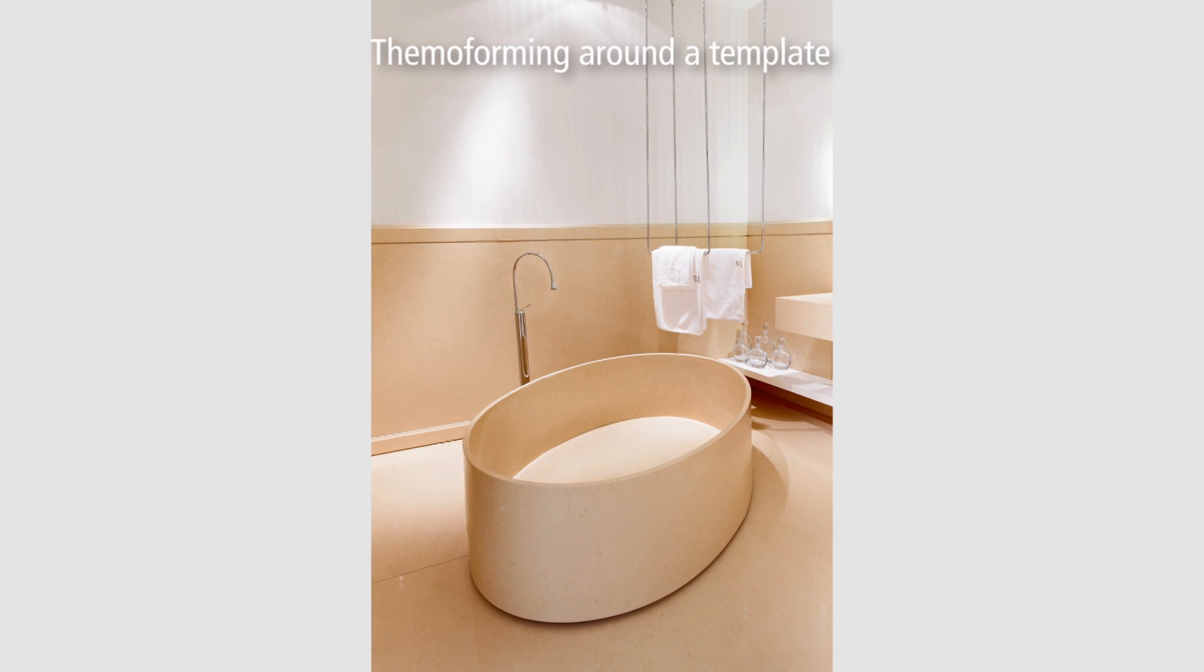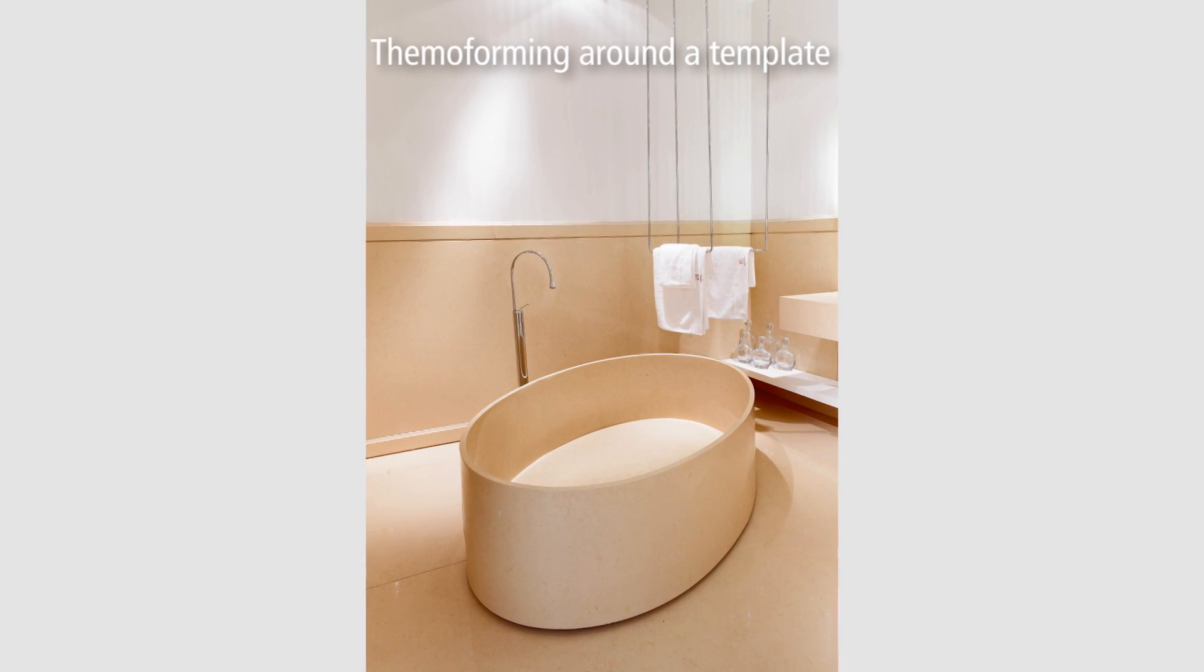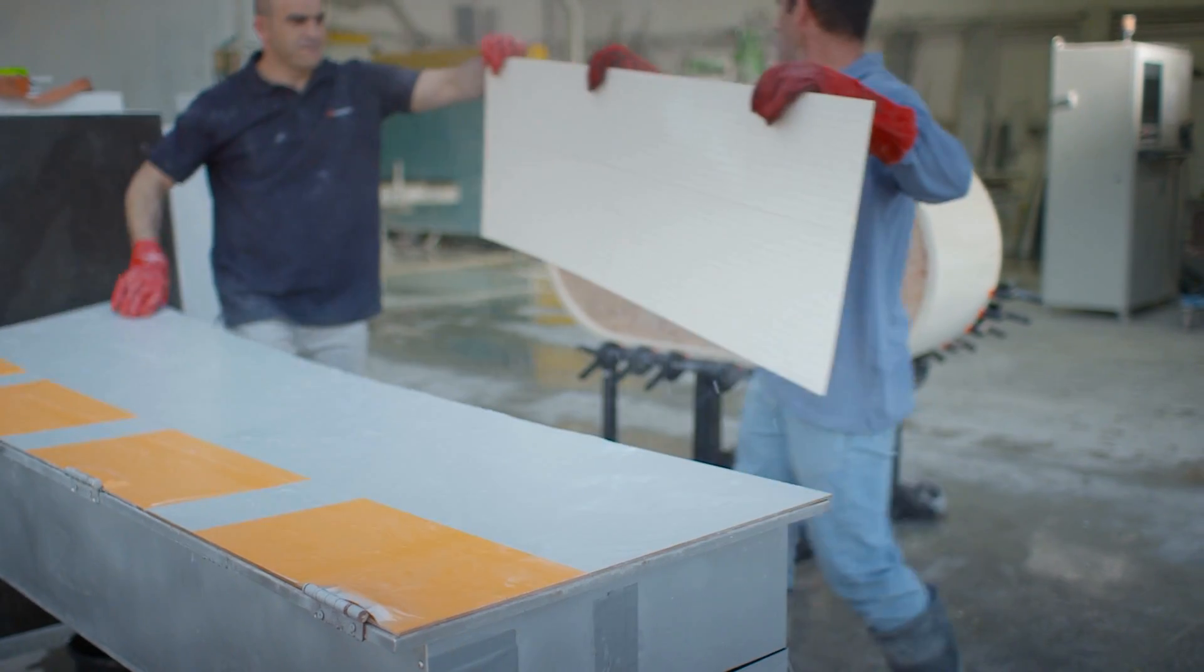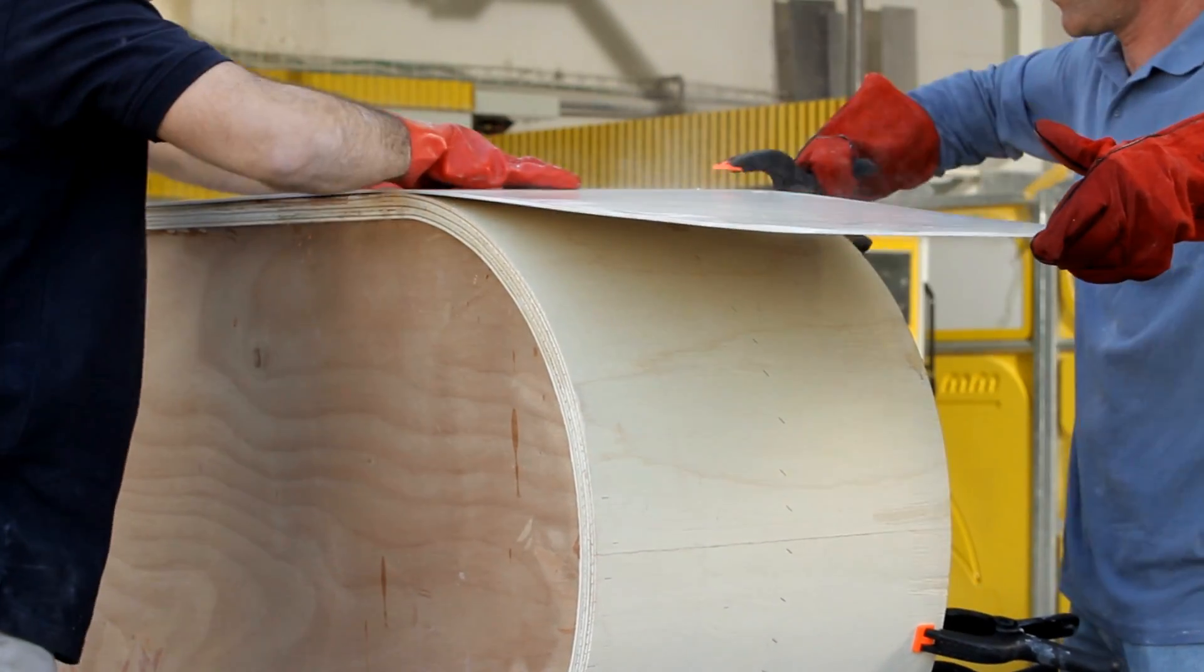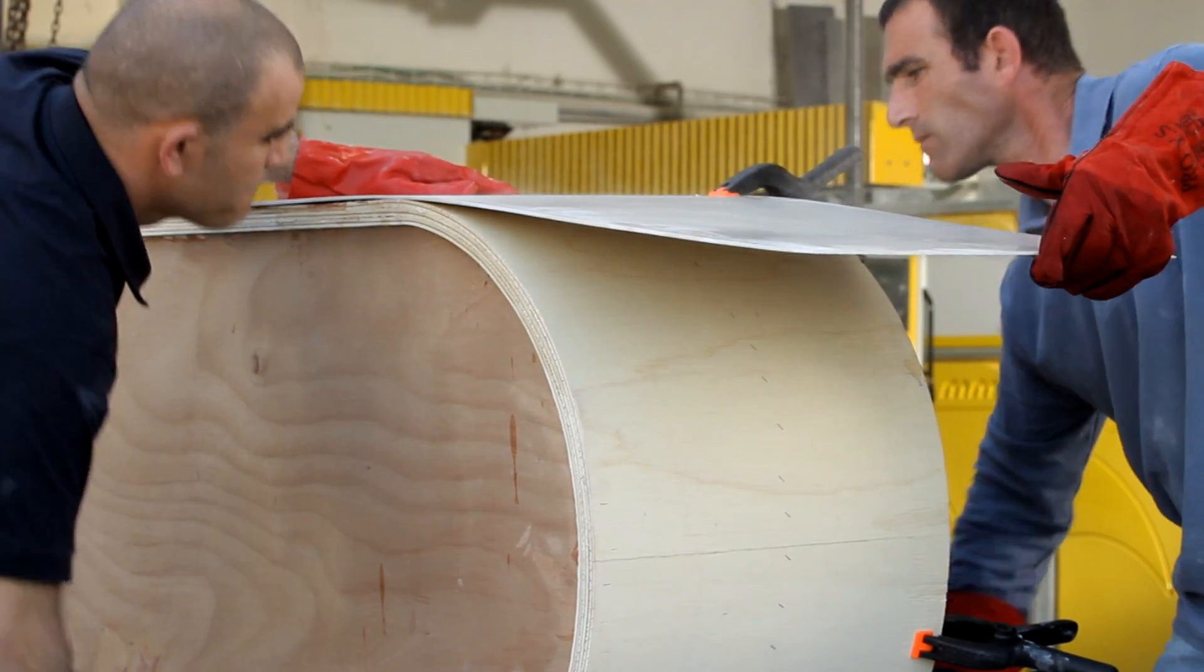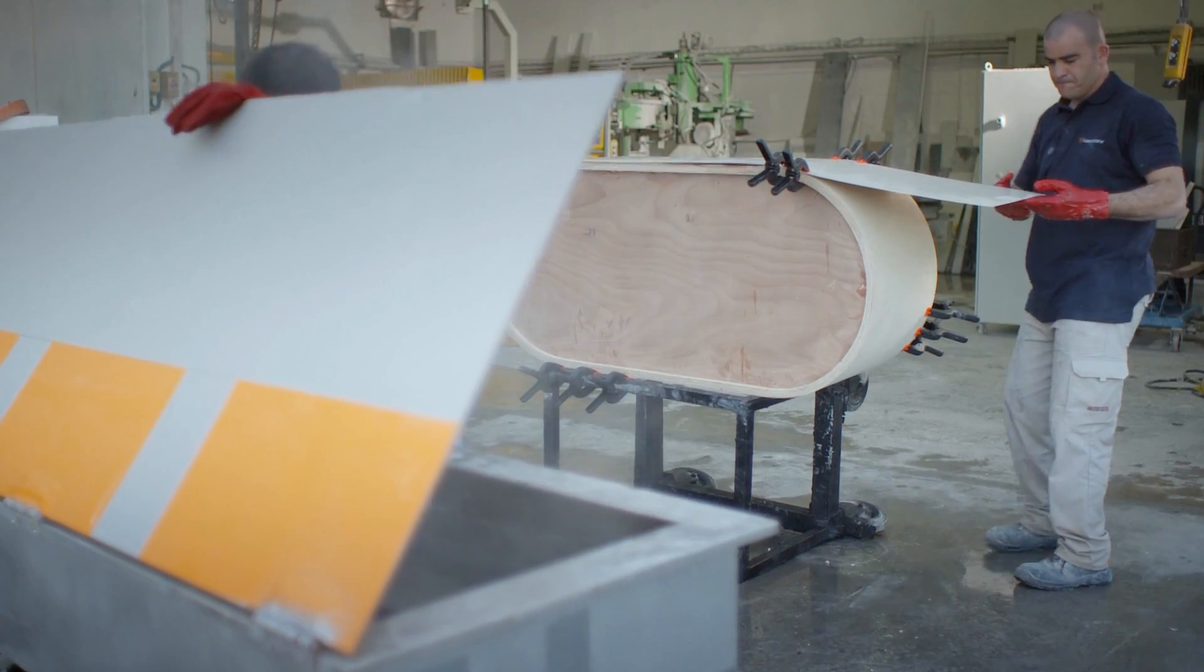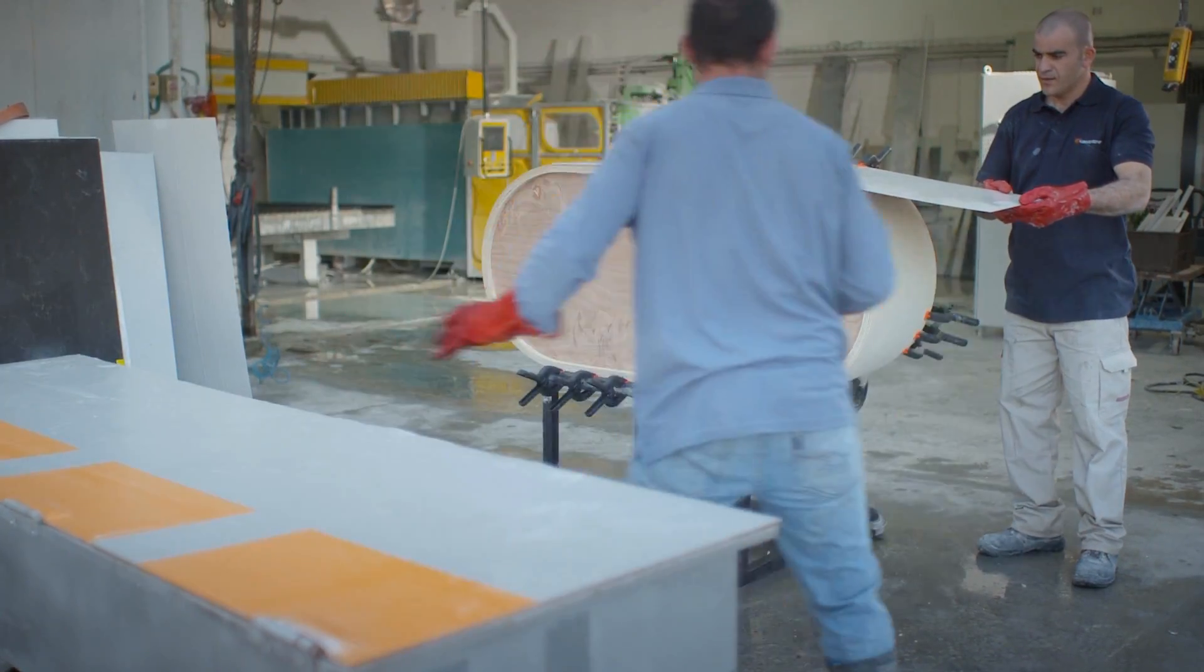This bathtub was made with the thermoforming around the template technique. Bend the flexible Caesarstone around the template and secure it with clamps. You will need to pour hot water over the Caesarstone a few times to keep it flexible, otherwise it may break.